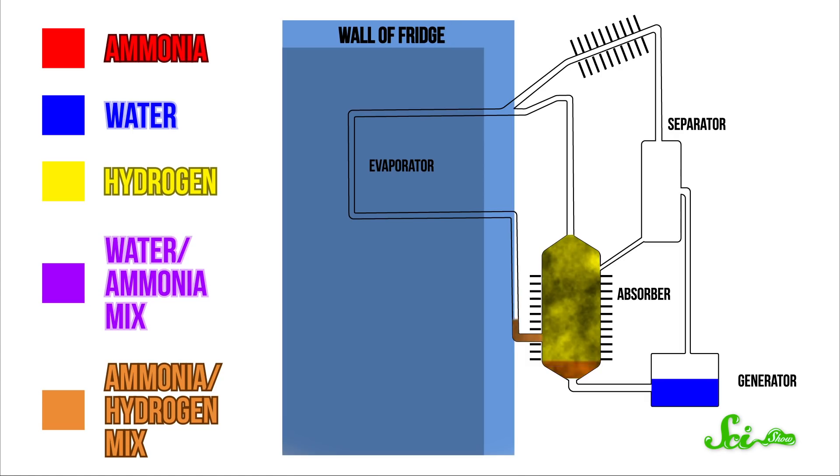This sucks heat away from the inside of the fridge, chilling it down. Then, the ammonia gas is piped into a different container filled with water, where it mixes and forms a solution. This solution is boiled with the help of burning gas or kerosene, and then the resulting vapors are passed through a series of separators and condensers.